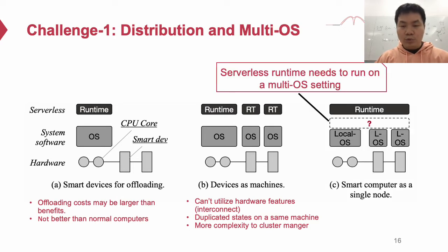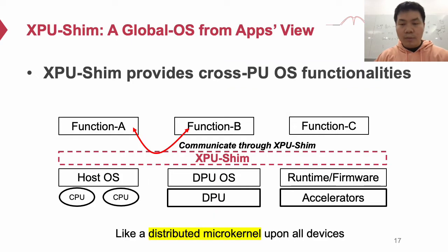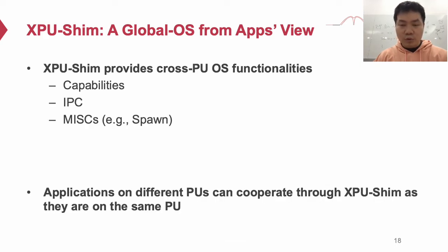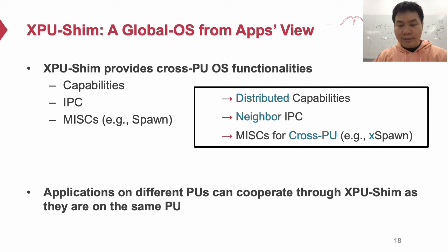In this work, we treat a heterogeneous computer as a single node but with multiple OSs. Therefore, a serverless runtime needs to run on a multi-OS setting. We propose XPU-SIM, which is a shim layer between applications and the underlying multi-OSs. From an application's view, XPU-SIM is like a global OS which provides cross-PU OS functionalities like inter-process communication. Following the design of micro-kernels which includes capability IPC and other interfaces like POSIX, XPU-SIM provides distributed capabilities, neighbor IPC, and interfaces like XPOSIX. Applications on different PUs can cooperate through XPU-SIM as if they are on the same PU.